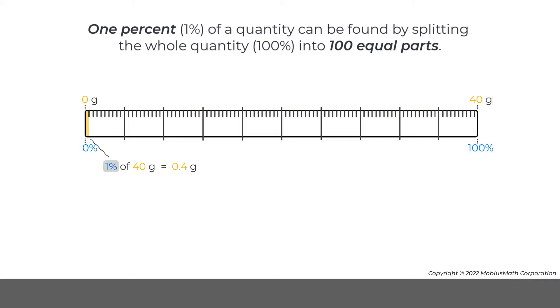1% of 40 grams can also be written as 1 one-hundredth times 40 grams.